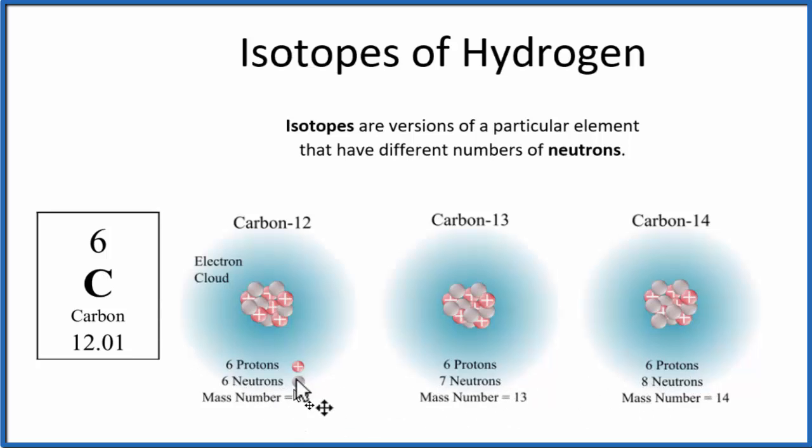We add the protons and the neutrons together to get the mass number, and that's how we name isotopes: carbon-12, carbon-13, and carbon-14.